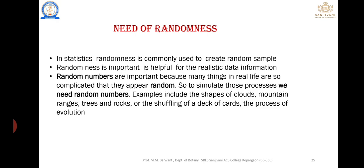For example, in a population, we cannot consider the entire population — we randomly select a group from the population. The third need is the random number table method. In real life, things are very complicated. For example, if we have crops in a farm, we use the random number table method to select samples from the field. Examples include shapes of clouds, mountain ranges, trees, rocks, shuffling cards, and the evolutionary process.